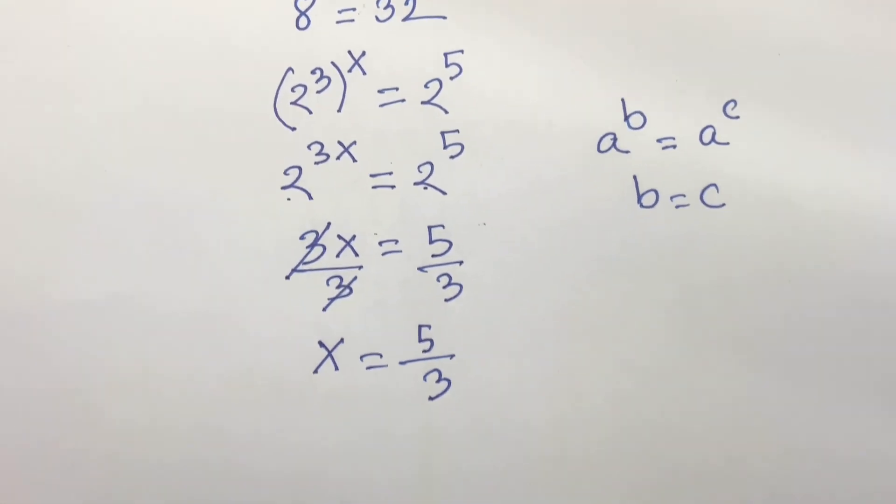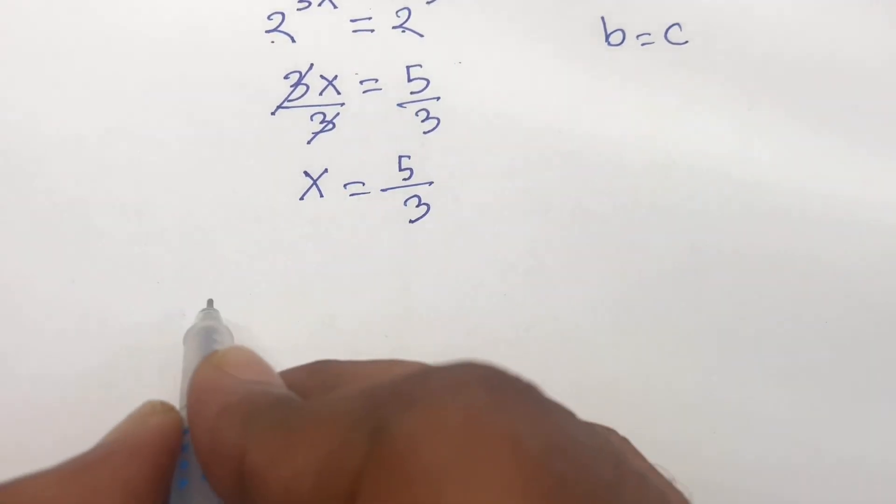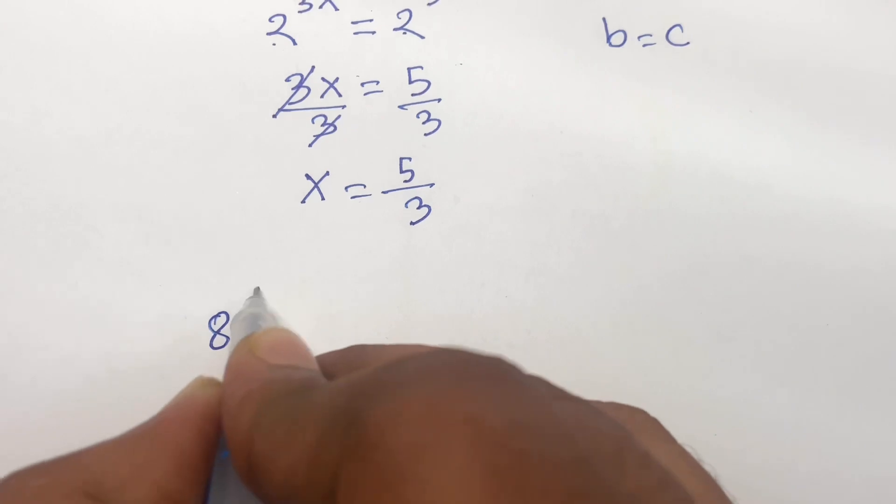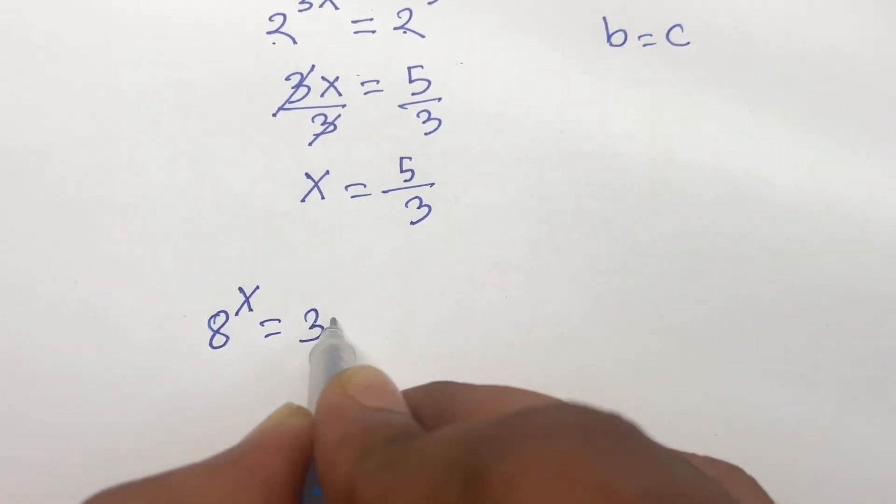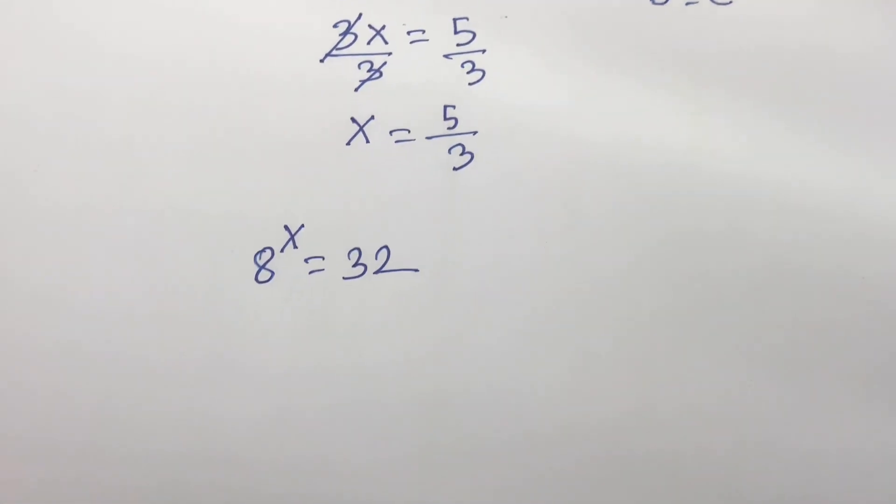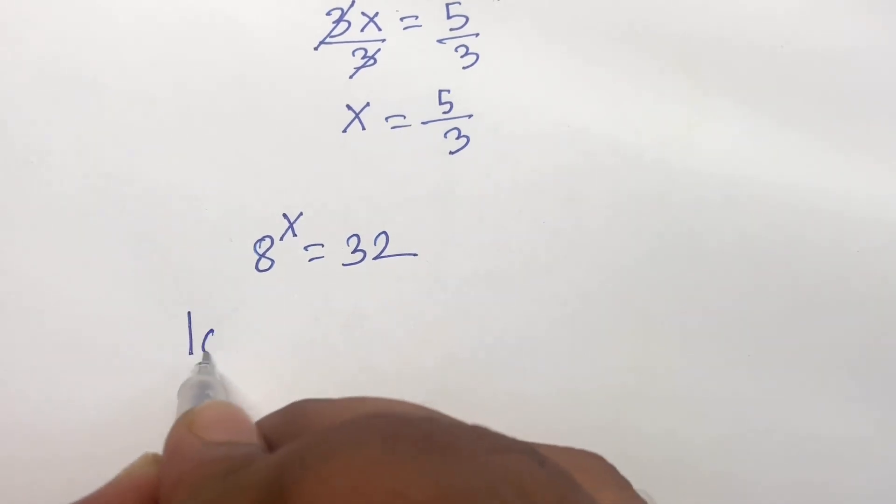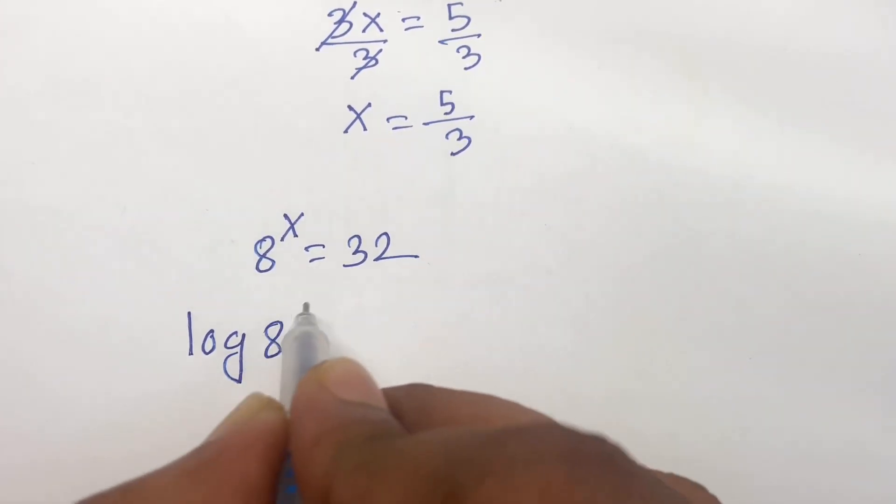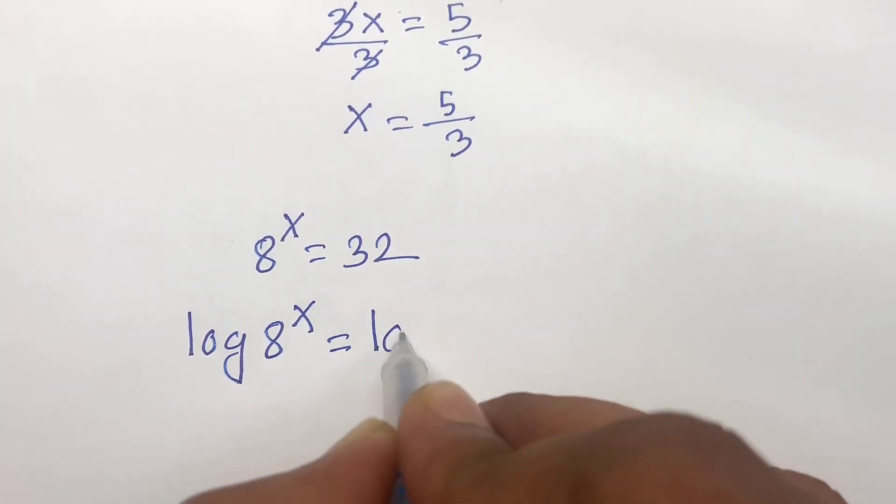Now I solve this question using an adjusted method. Our question is 8 power x is equal to 32. I use both sides log, so log 8 power x is equal to log 32.